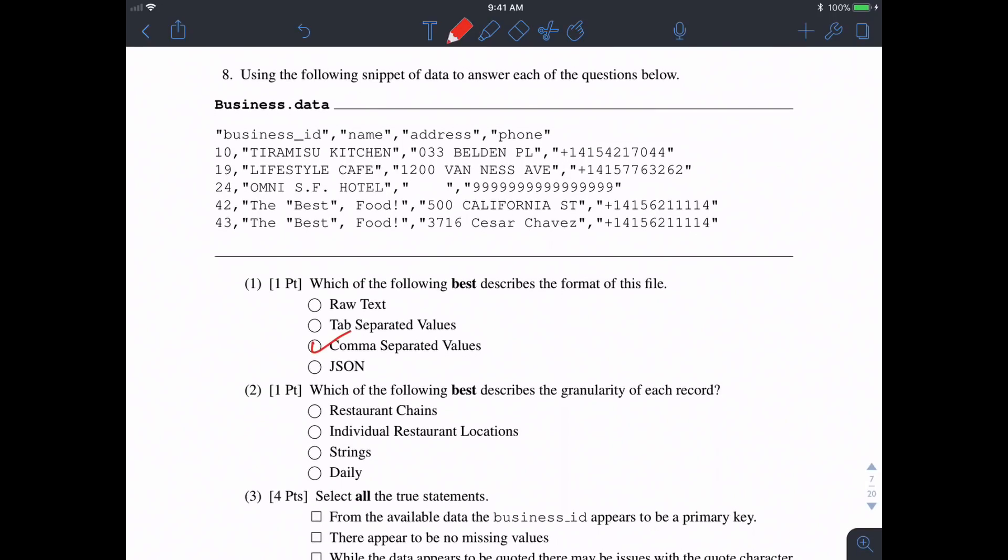Part 2: Which of the following best describes the granularity of each record—how specific or general each row is? Looking at it, the names are the names of specific restaurants. The reason it's not restaurant chains is that for example, 'The Best Food' has multiple rows but with different addresses. So it's individual restaurant locations.